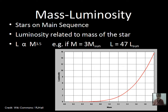Luminosity is one measurement, and spectroscopic binary stars provide the mass values for stars. When this is graphed, we find a strong connection between the mass of a star and its luminosity. The correlation is that luminosity is proportional to mass raised to the 3.5 power — not M cubed, not M to the fourth, but in between.